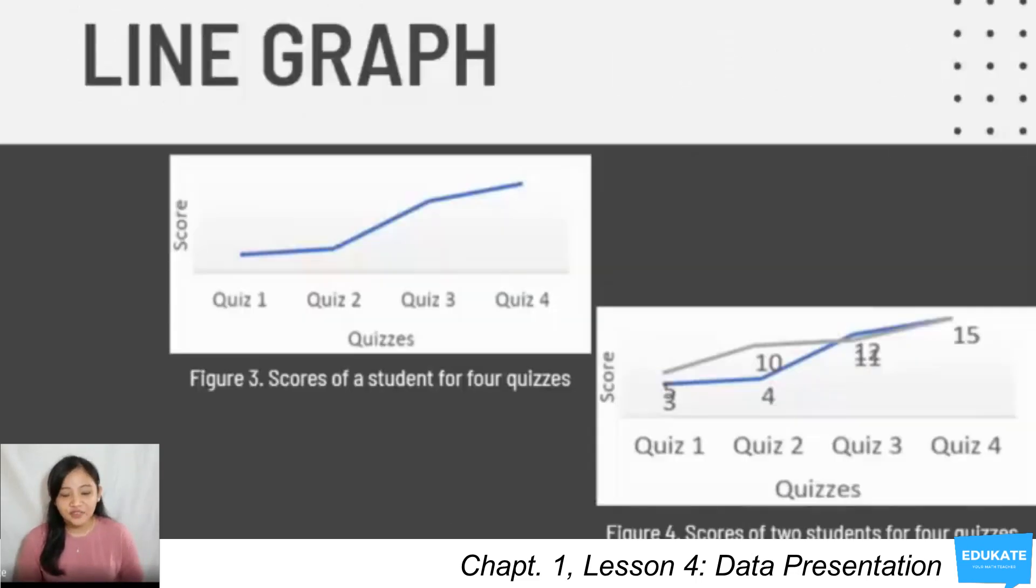Next, you have the line graph. You can have more than one or two lines here in a line graph, but a rule of thumb is a maximum of five lines to be able to see the trends. You can also have a line graph having no labels for the scores or a line graph having labels for the scores.